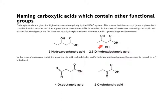In this example, counting one, two, three, four carbons gives us a butanoic acid. We notice hydroxyl groups on carbon two and carbon three coming off as functional groups, and we would name this 2,3-dihydroxybutanoic acid.